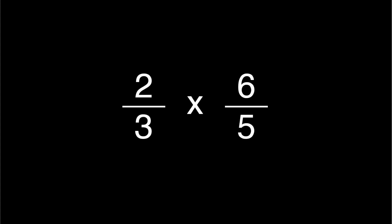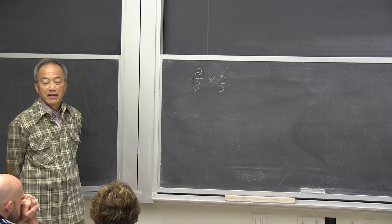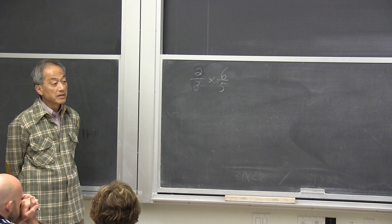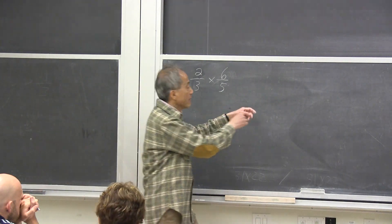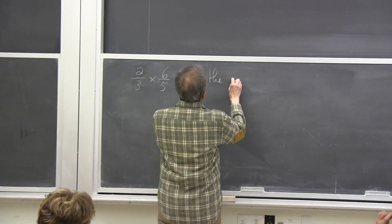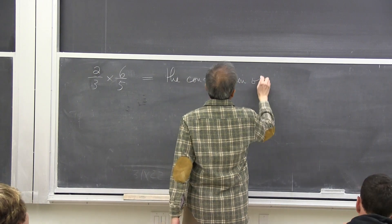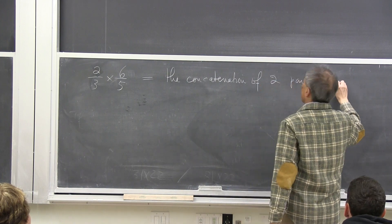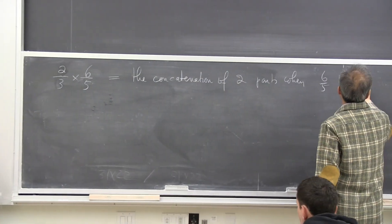What do you mean by giving away 2 thirds of it? You divide it into 3 equal pieces and give away 2. Yes! And that's what should be your proper practice. So let's write it down: this is the concatenation of 2 parts when 6 fifths is partitioned. I don't want to use 'divide' because that word is loaded in the context of multiplication.